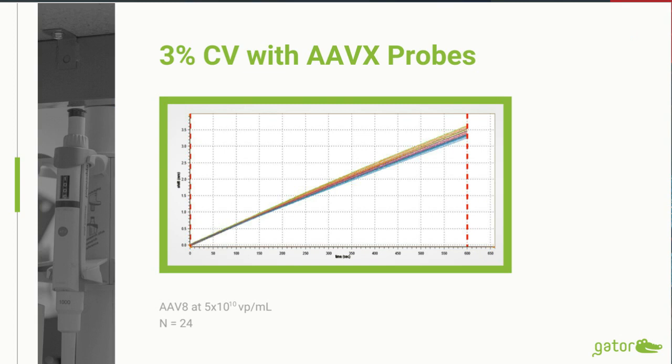In a precision study with AAV8, we can achieve CVs as low as 3%. This high level of precision isn't necessarily restricted to AAVX probes — all of the Gator viral probes have very good CVs. After the capture step, the probe is transferred over to a lysis reagent and the lysis step is performed by heating the sample at 70°C for five minutes.